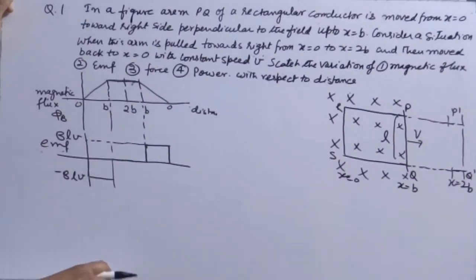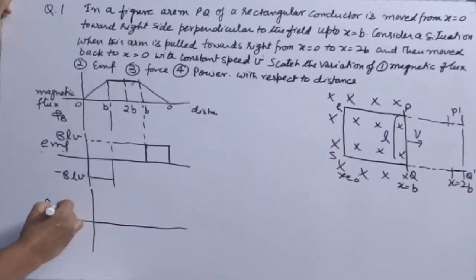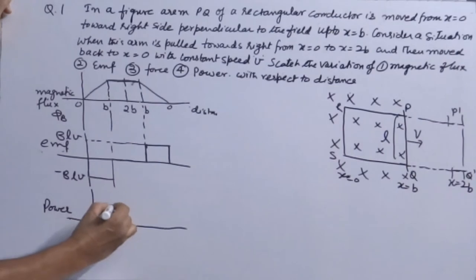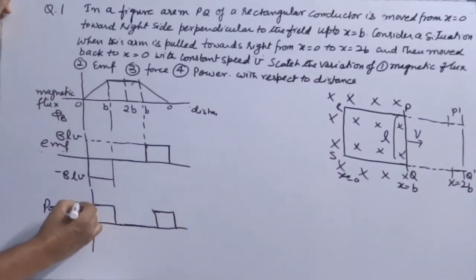Force can also be positive and negative. And third graph is power. Power is never negative. So in case of power, you will have both positive sides. This positive, then 0, then again you will find positive power coming up here. This value will be equal to B squared L squared V squared over R.